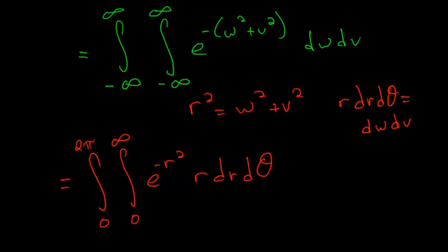And from here we just need to make a simple u substitution, where u is r squared and du is 2r dr. And remember this is just for the inner integral here.